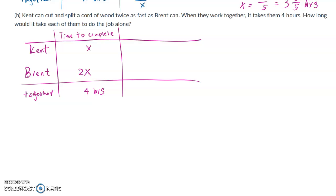Okay, so now let's go to the work rate. For each hour, Kent will complete 1 over X, this much of the whole task, and Brent will complete 1 over 2X, this much portion of the whole task. When they work together, for each hour, one quarter of the job will be completed. So we can set up an equation which is, for each hour, 1 over X plus 1 over 2X, how much they complete in one hour, should be equal to 1 fourth.